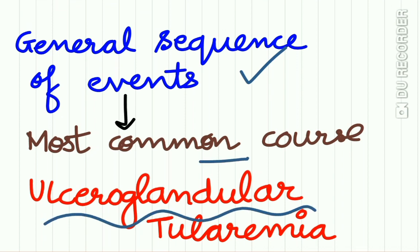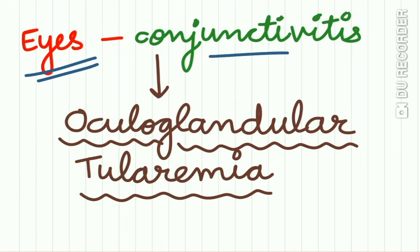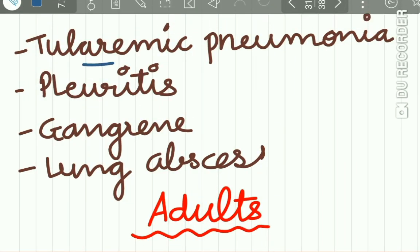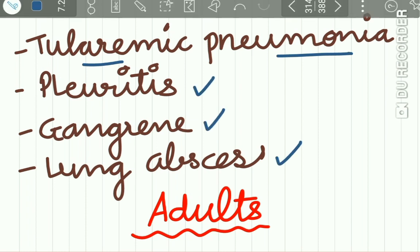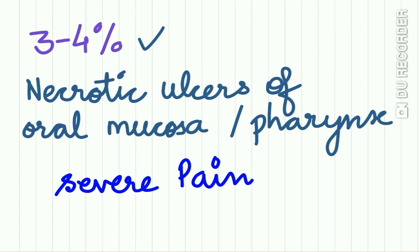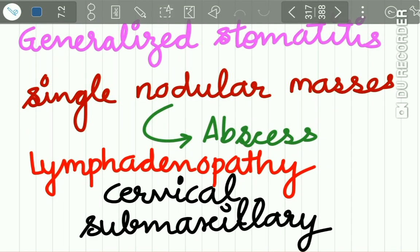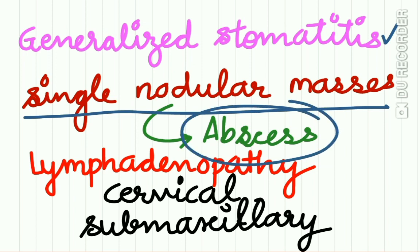The organism may enter the skin through a cut or sore, resulting in a suppurative ulcer; the associated lymphatic vessels become painful and the lymph nodes enlarged and palpable — this is the most common course of ulceroglandular tularemia. When eyes are infected, conjunctivitis leads to oculoglandular tularemia. Tularemic pneumonia may be associated with pleuritis, gangrene, and lung abscess, occurring mostly in adults. Oral manifestations occur in only 3–4% of cases, with necrotic ulcers on the oral mucosa and pharynx.